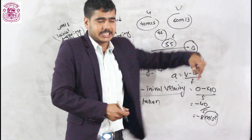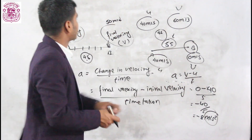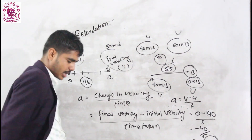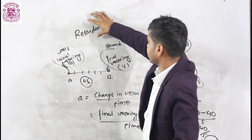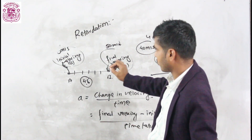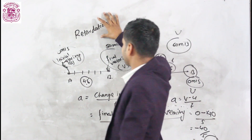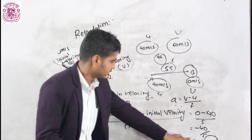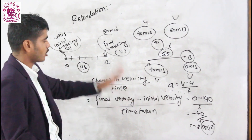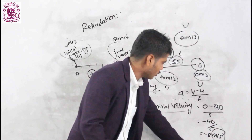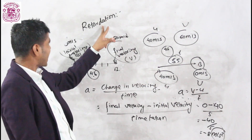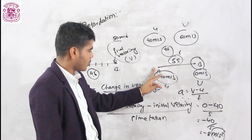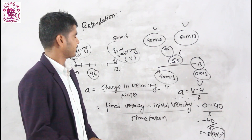If the value of acceleration comes out negative, it is called retardation. Retardation is defined as the negative value of acceleration. So we say the retardation of a body is 8 meters per second squared — not minus 8 — because retardation itself represents the negative value. The retardation is 8 meters per second squared, but the acceleration is minus 8 meters per second squared.